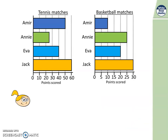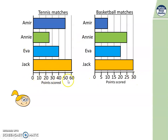Here is Eva and she's built two bar charts. Pause the video and have a think - what are these bar charts showing us? Can you spot what's the same and what's different? Did you spot that these bar charts are going across from left to right, not from the bottom to the top? Bar charts can do this, and we just shift the scales across the bottom. This one goes up in tens and this one goes up in fives - this one is for tennis matches and this one is for basketball.